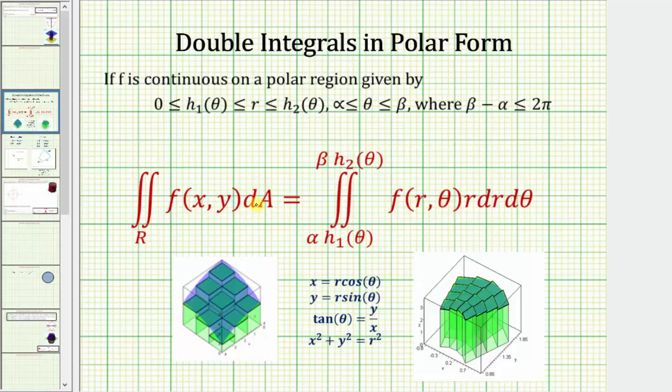And then differential A, which is equal to dx dy or dy dx in rectangular form, is equal to r dr d theta in polar form.